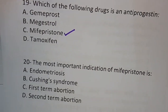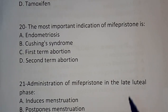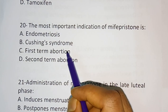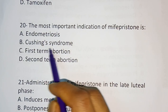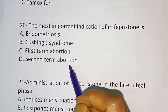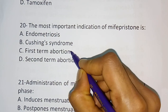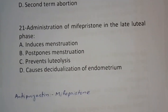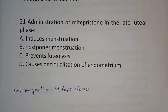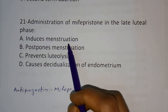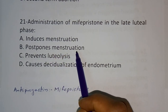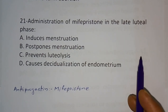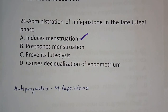Question number 20: The most important indication of mifepristone. It is an anti-progesterone drug used for first-term abortion. Options: endometriosis, Cushing syndrome, first-term abortion, second-term abortion. Correct answer: first-term abortion. Question number 21: The administration of mifepristone in the late luteal phase — options include: induces menstruation, postpones menstruation, prevents luteolysis, causes decidualization of endometrium. Correct answer is option A — induces menstruation.